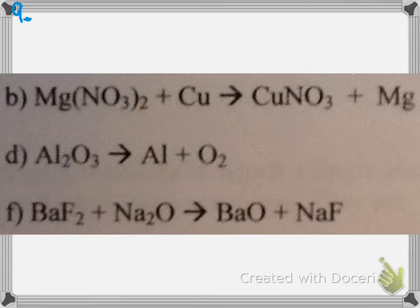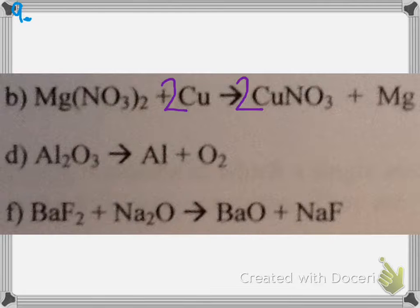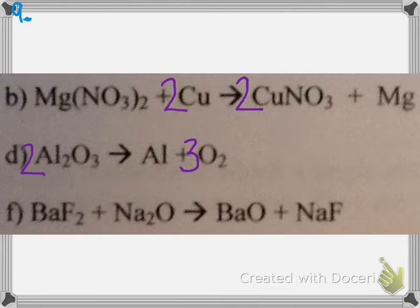For the single replacement reaction (Sr + BaF2): one strontium, one strontium, two chlorines and two fluorines — this skeleton equation is already balanced. For the other single replacement (Mg + Cu(NO3)2): one magnesium, two nitrates and one nitrate, so a coefficient of two in front of Cu(NO3)2, one copper and two coppers, so a coefficient of two in front of Cu — properly balanced. For the decomposition of aluminum: a coefficient of two in front of Al, three oxygens and two oxygens, LCM is six, so a coefficient of four in front of Al and three in front of Al2O3 — properly balanced. For the double replacement (Ba + NaF): one barium, two fluorines and one fluorine, so a coefficient of two in front of NaF, two sodiums and two sodiums, one oxygen and one oxygen — properly balanced.